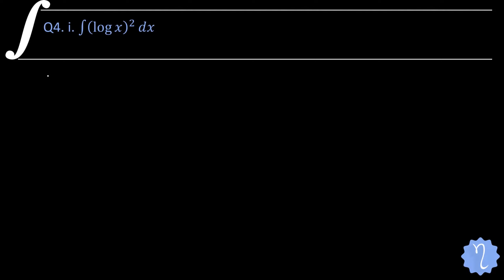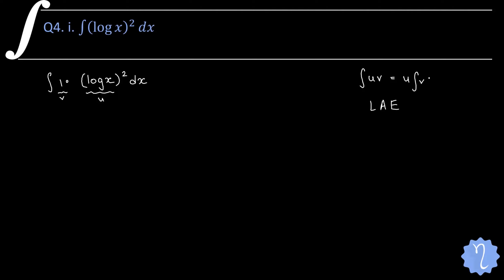I will write this question as 1 into (log x)². If you remember, for integration of u into v, how do we select the order of u and v? It should follow the LIATE order. So log x is definitely u and 1 is definitely v. The formula is: u × ∫v dx − ∫(∫v dx × derivative of u) dx. Now let us find all these values.